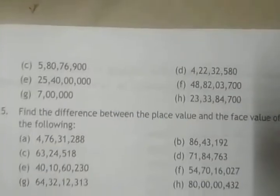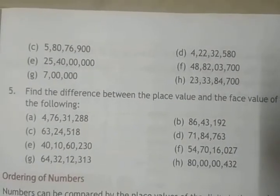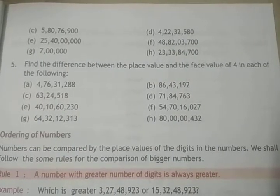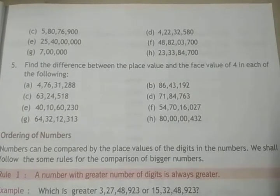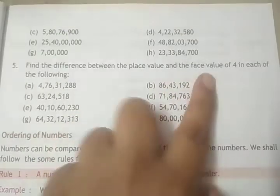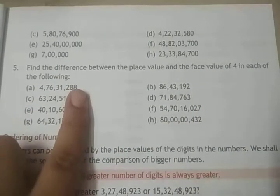Next, the other questions are your homework to complete in your rough copy. Question number 5 is: find the difference between the place value and the face value of 4 in each of the following.